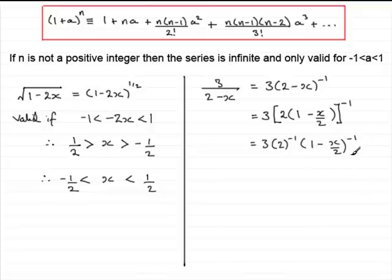It's this part that we're interested in. This is the part that we would use the binomial expansion formula for. Notice how the power minus 1 is not a positive integer, so that means the series would be infinite and it's only valid if the a term, which is minus x over 2, lies between minus 1 and 1. Therefore, this is valid if minus x over 2 lies between minus 1 and 1.